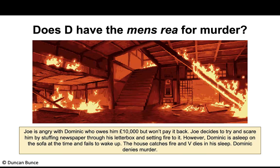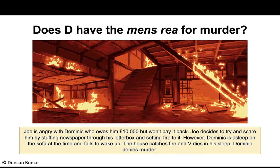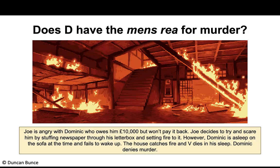Example: does the defendant have the mens rea for murder? Joe is angry with Dominic, who owes him £10,000 but won't pay. Joe stuffs newspaper through Dominic's letterbox and sets fire to it. Dominic is asleep on the sofa, fails to wake up, the house catches fire, and Dominic dies. Joe denies murder. This is a classic case of indirect or oblique intent — did Joe foresee Dominic's death as virtually certain? The jury would most likely find evidence of mens rea for murder and could choose to find him guilty.